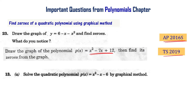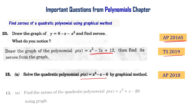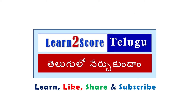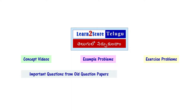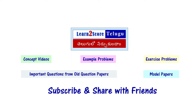Solve the quadratic polynomial P(x) = x² - x - 6 by the graphical method. In this video, I am going to show you how to solve this kind of problem. Our channel has videos on math concepts, example problems, exercise problems, and important questions from old question papers and model papers. Subscribe to our channel now and share it with your friends.